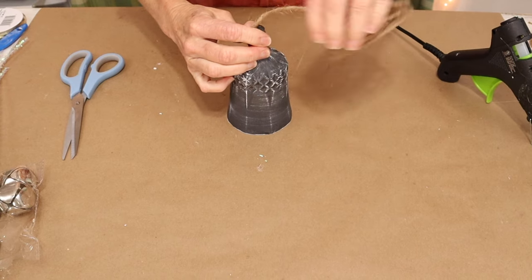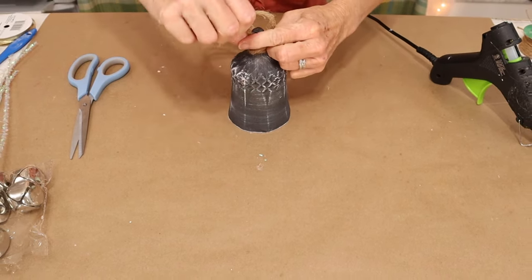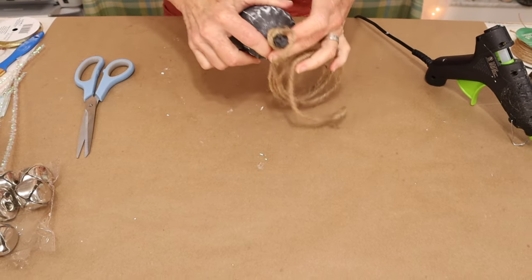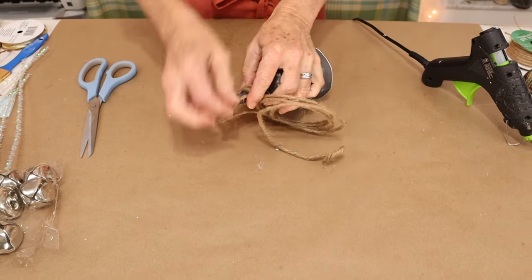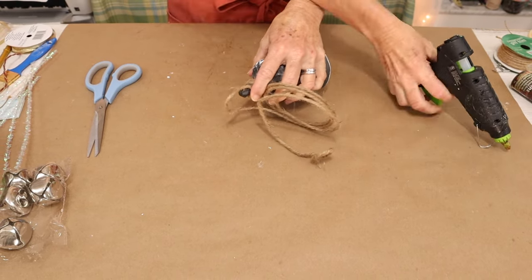And it helps when you get to the step where you're going to make your loop above your wine glass to just add a touch of hot glue at the little bend there. And then you can continue on making your hanger and then wrapping it around.